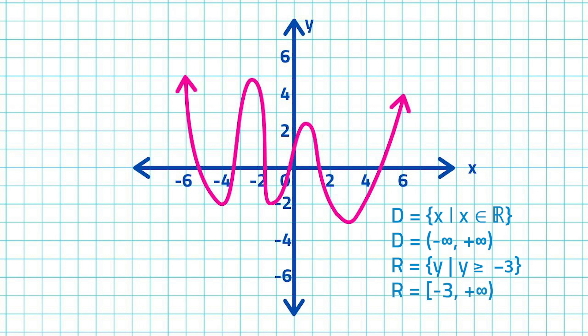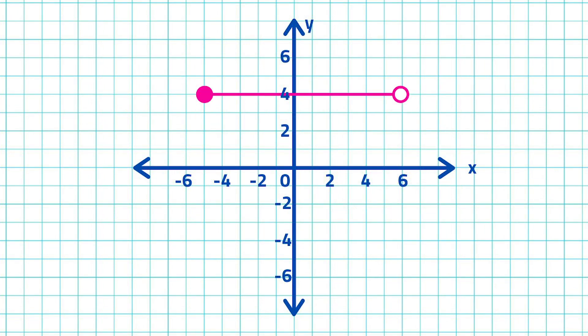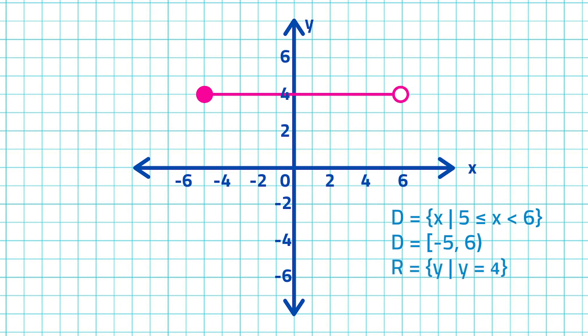In interval notation, range is from negative 3 to positive infinity, inclusive of negative 3. The domain is from negative 5 to 6, inclusive of negative 5. The domain consists of all real numbers greater than or equal to negative 5 but less than 6. In interval notation, domain is from negative 5 to 6, including negative 5 but not including 6. The range is only restricted to 4, since all points have 4 as the y-coordinate. Range is the set of y such that y is equal to 4.